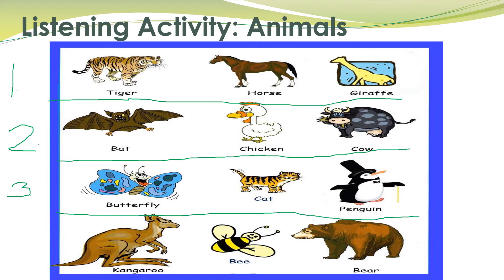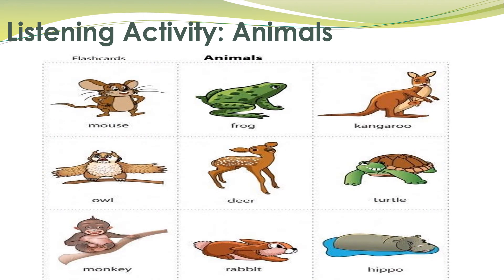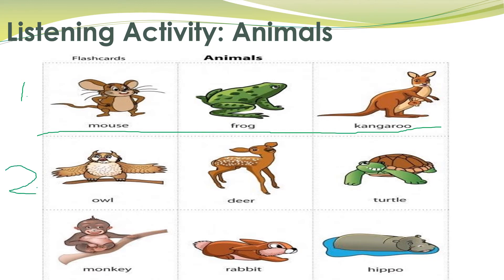Number four: kangaroo. Where is the kangaroo? Here. For the next picture, number one: mouse. Where is the mouse? Number two: turtle.